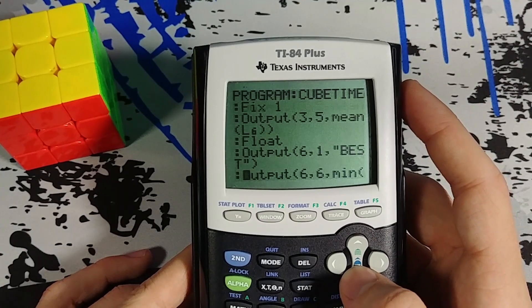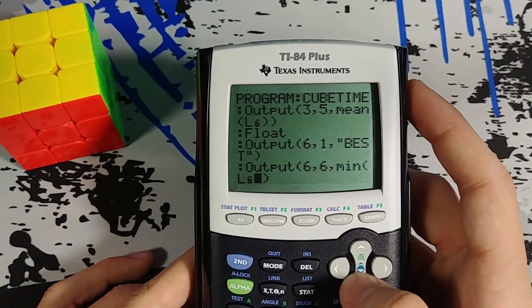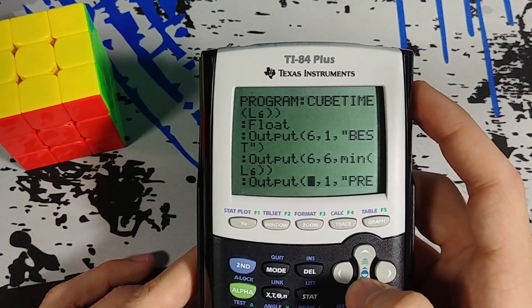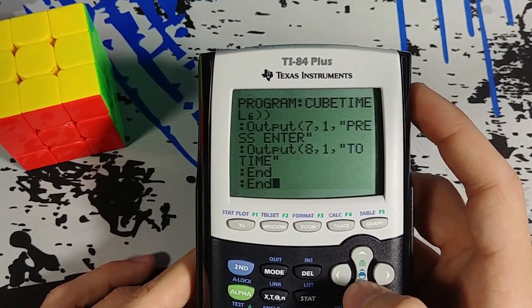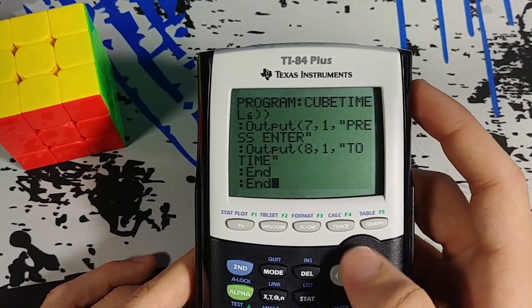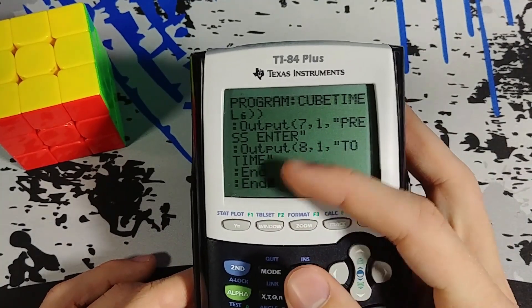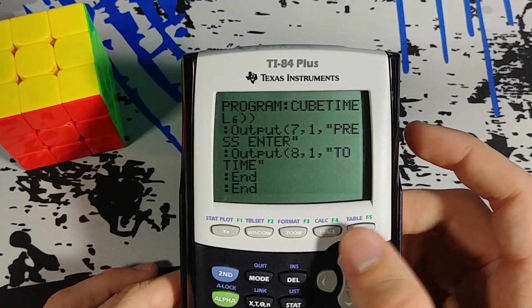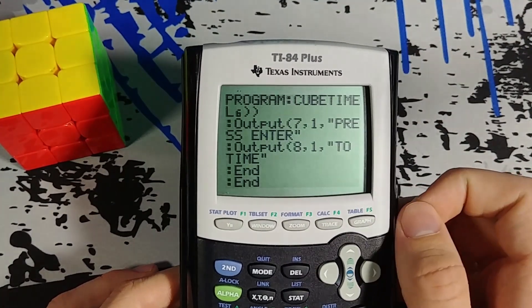Anyway, then it's going to display best and display the minimum value of list 6. Right here. And then say press enter to time. And then end. This is the end of the program. These two end statements are basically ending the if statement and my overarching repeating statement.